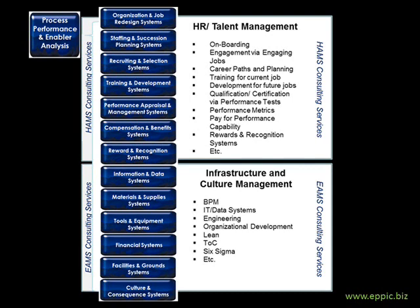But also the environment is critically important. Having the systems in place that deal with the information and data, the materials and supply systems, the tools and equipment systems, the financial systems, the facility and grounds systems, and those systems that impact the culture and the consequences that are in place — those systems are critical to enabling performance or not.